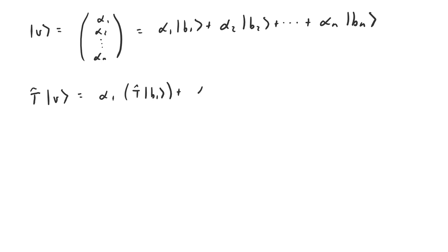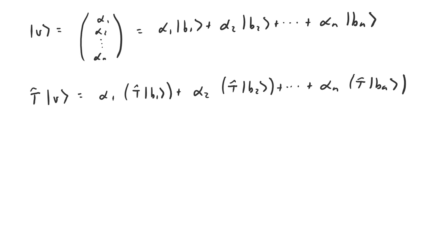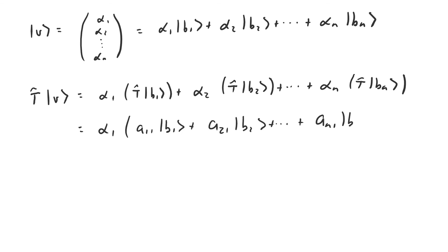So acting on v with t is the same thing as alpha1 times the result of acting on b1 with t, plus alpha2 times the result of acting on b2 with t, all the way up to alphan times the result of acting on bn with t. We know what t does to each of the basis vectors, so we can just substitute in what it does to each of those for those expressions. And this is what we get.